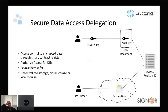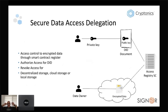We can also do secure data access delegation. If we have public and private keys, we have an access registry either in a smart contract or off-chain. We store data encrypted with a symmetric key — some form of AES — and then encrypt that key with our own public key, for example our Ethereum public key. This allows controlled, delegated access to encrypted data.